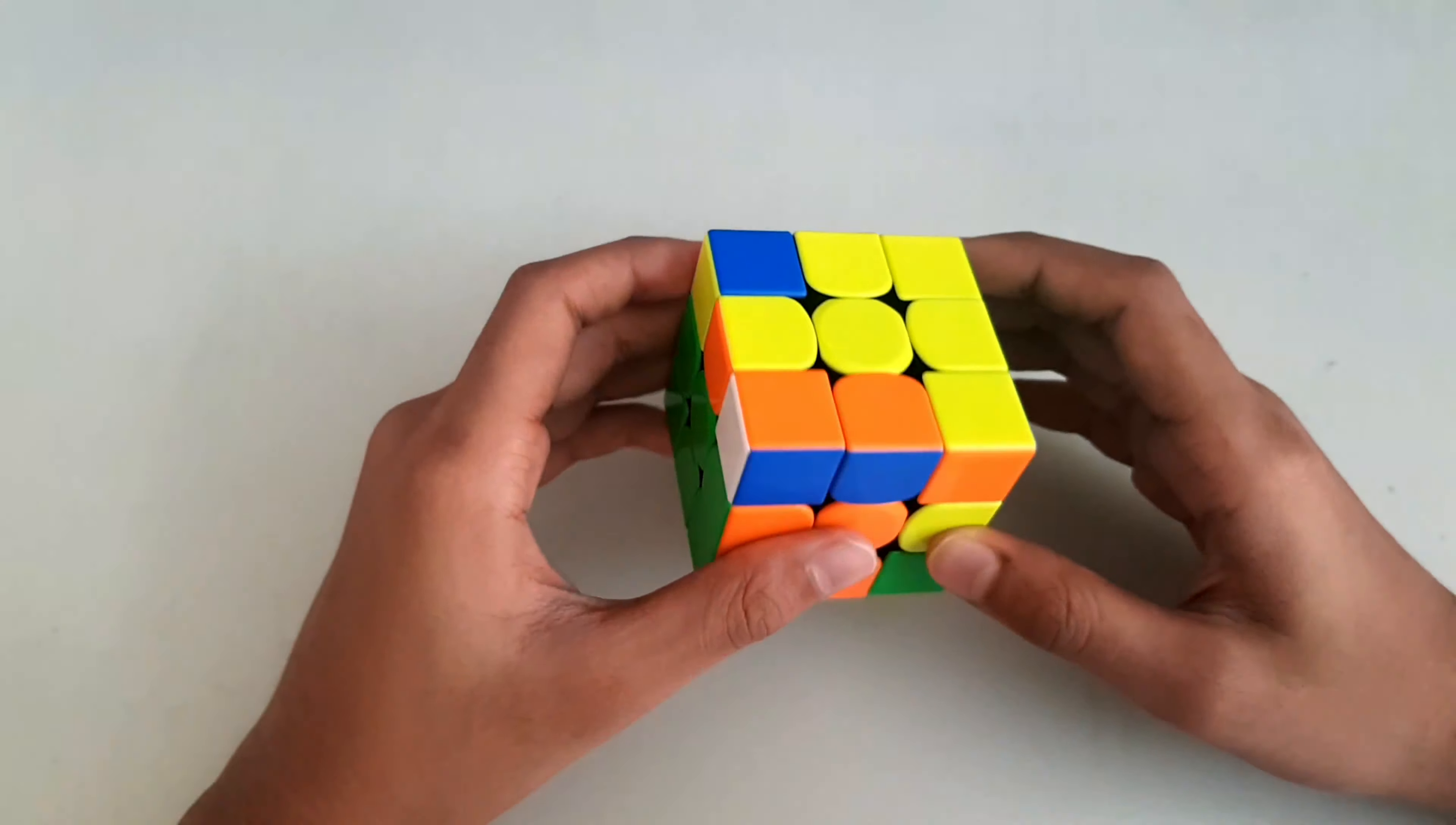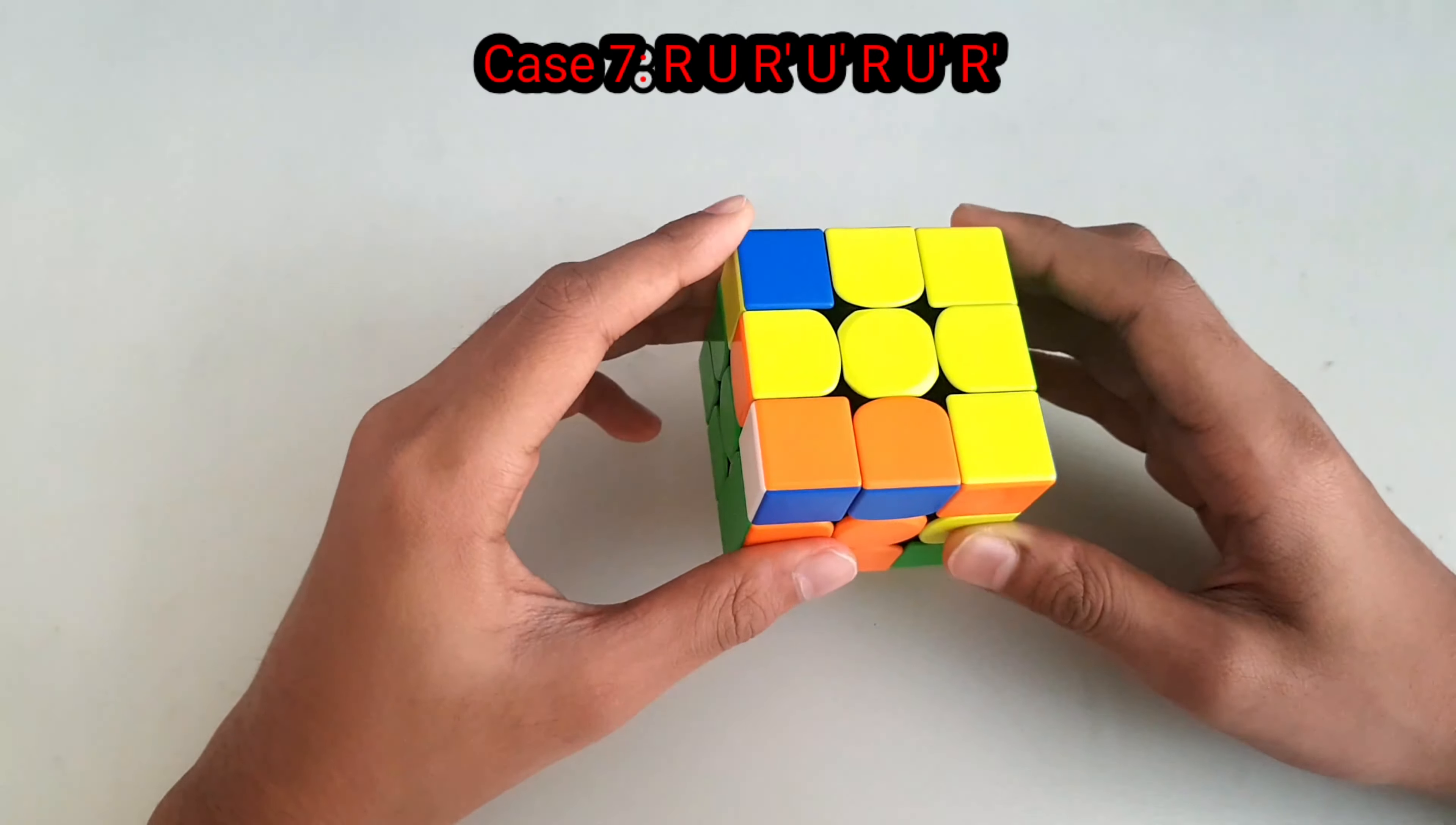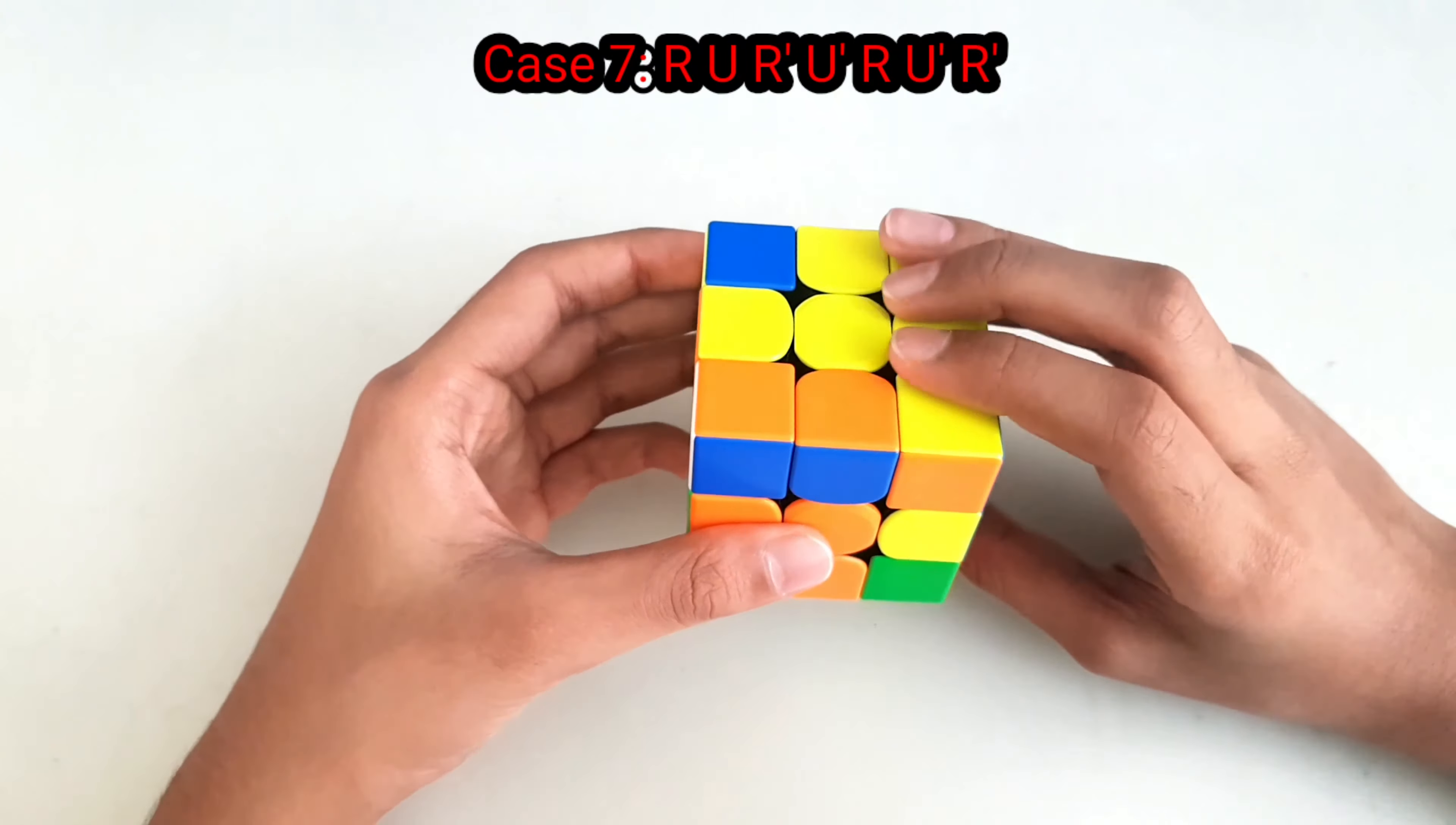The next case is when you have the corner facing the left in the top left side. The algorithm goes like this...